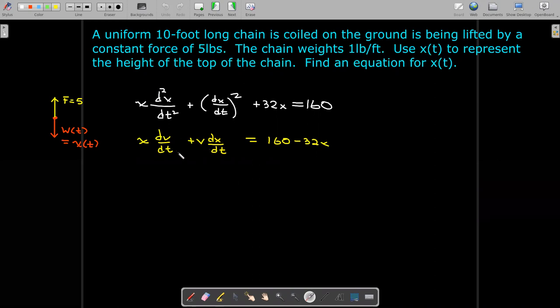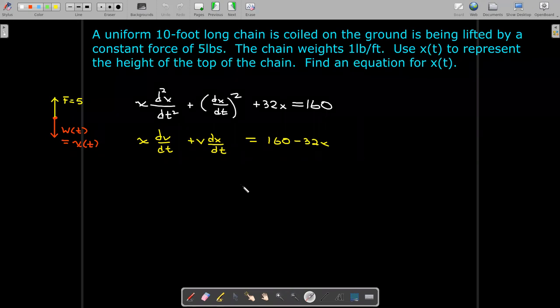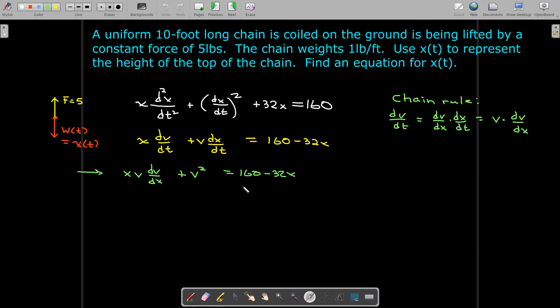So we're going to go back and rewrite it in terms of two variables, x and v, and then we're going to take advantage of the chain rule. I'd like to actually rewrite this in terms of the derivative of v with respect to x, rather than the derivative of v with respect to t. Now why would I want to do that?